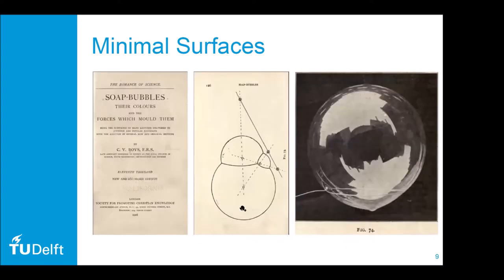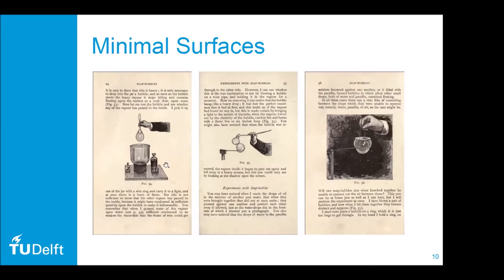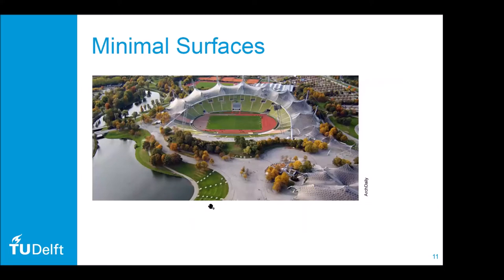This fascinated Frey Otto in architecture. He actually performed physical simulations with soap bubbles and photographed them to study the possible shapes for the Olympic stadium in Munich. Today we can do better — instead of physical simulations, we can simulate these shapes computationally and get the shapes directly instead of studying photographs taken from soap bubbles.